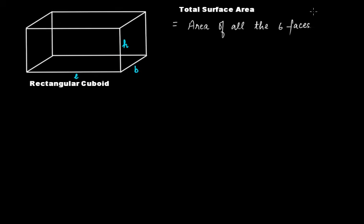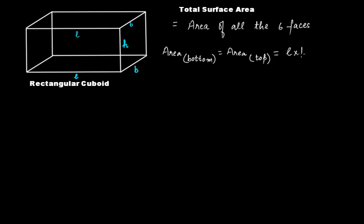The bottom face and the top face will have the same area because they are identical. This is length and this is breadth — same for both. So if this is a rectangle, its area will be length multiplied by breadth, that is L × B. The area of the bottom face equals the area of the top face, which equals L × B. For these two faces together, the total area is 2 × L × B.